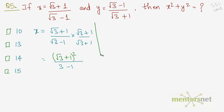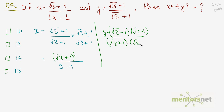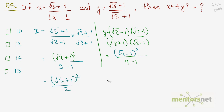Now simplify y. Multiply the numerator and denominator of y = (√3 + 1)/(√3 - 1) by (√3 - 1). The denominator becomes (√3)² - 1² = 2, and the numerator becomes (√3 - 1)². So x = (√3 + 1)²/2 and y = (√3 - 1)²/2.